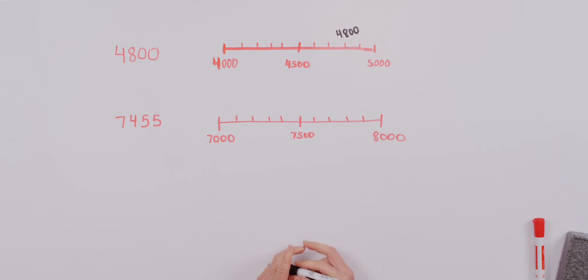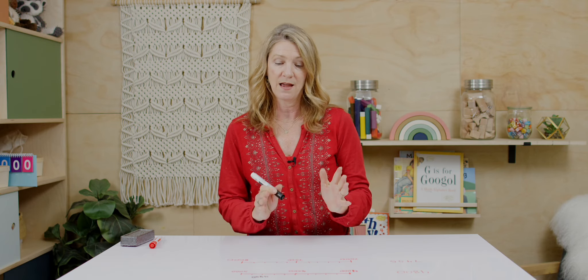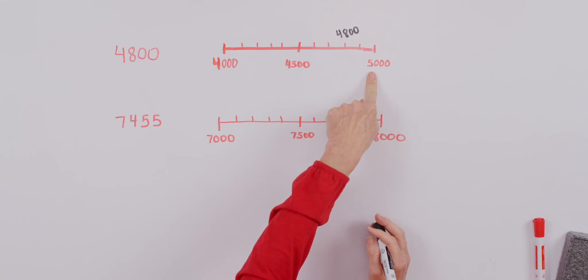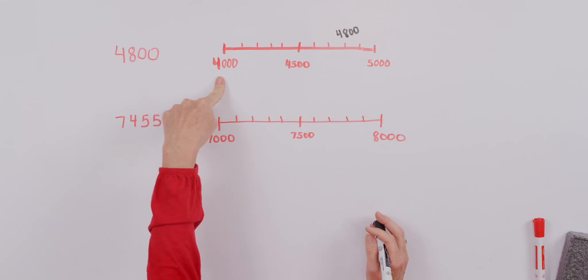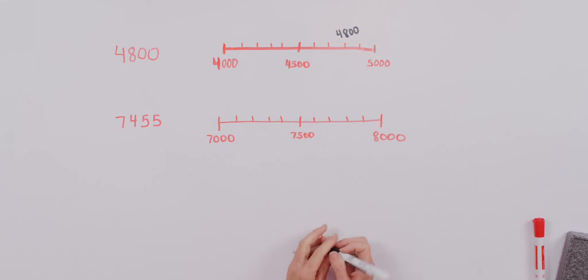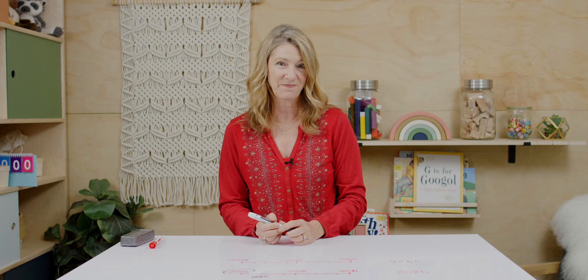Then, remember this strategy, we get to say, all right, if I want to round to the nearest thousand, am I closer to 5,000 or closer to 4,000? And we can easily visually see that we're near to 5,000. So, we would round 4,800 up to 5,000. Okay.